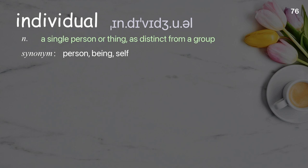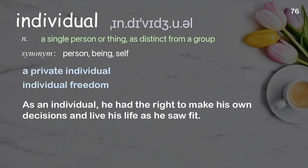Individual. A single person or thing, as distinct from a group. Examples: A private individual. Individual freedom. As an individual, he had the right to make his own decisions and live his life as he saw fit.